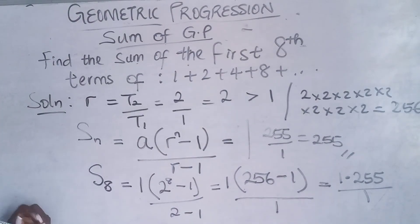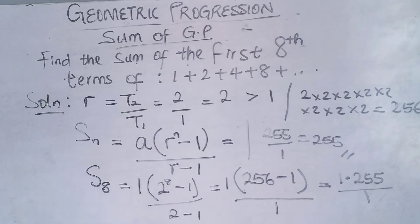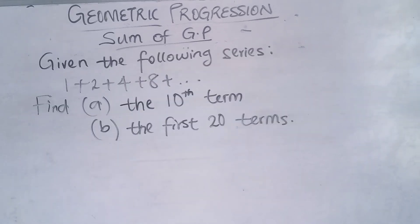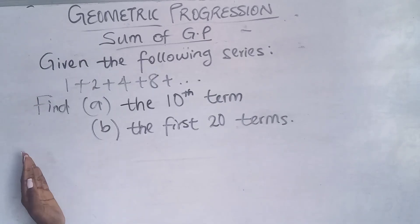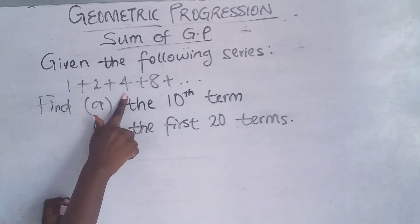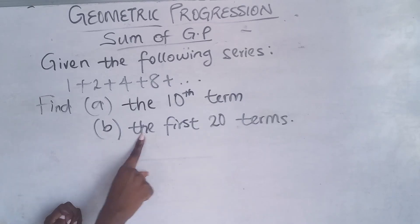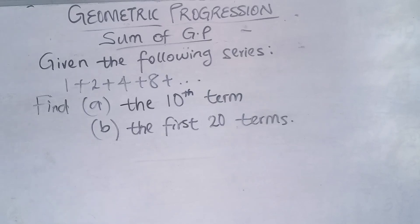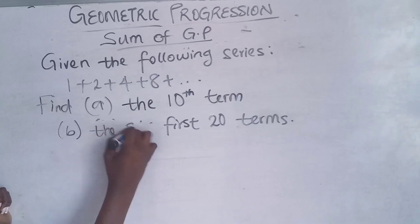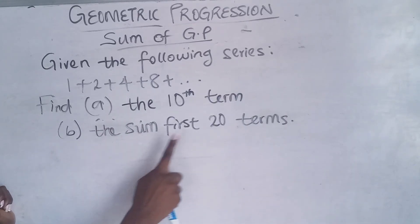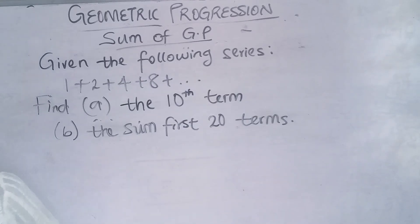So the sum of the first 8 terms of this series is 255. Now that you've learned the formula for the nth term of a GP and the sum of a GP, here is a practice question: using the series we just worked on, first find the 10th term, and secondly find the sum of the first 20 terms. Do this work and let me know your answer in the comment section below.